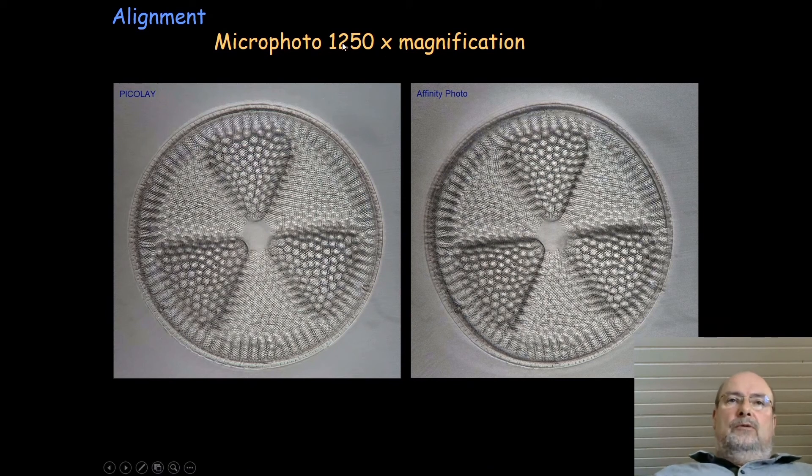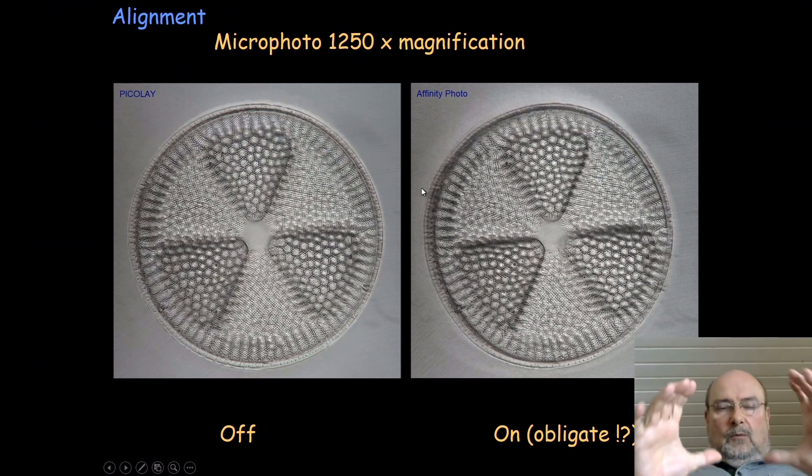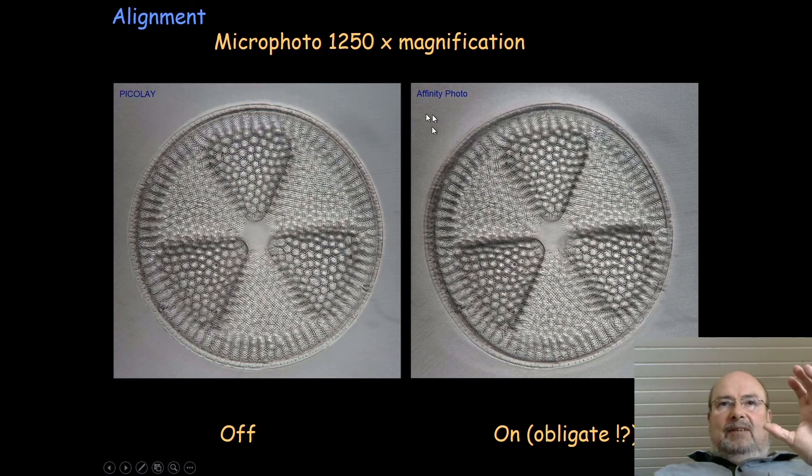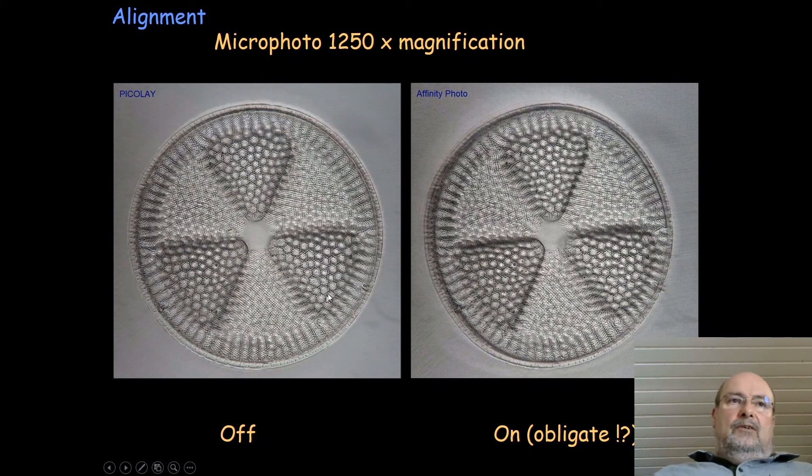I have another example here: a micro photo with a hundredfold objective. You see a Picolet image here on the left, there's no alignment in this case. Here is a stack done with the same images with Affinity Photo. Unfortunately one cannot switch off the alignment in this program. You see the quality of the result is much worse because there are halos and shadows wandering when you're going through the stack. Affinity Photo tries to compensate for that and then you see here the structures are lost, here is an additional thing coming up. It's not really sharp anymore. So in this case it's better to avoid the alignment, definitely.